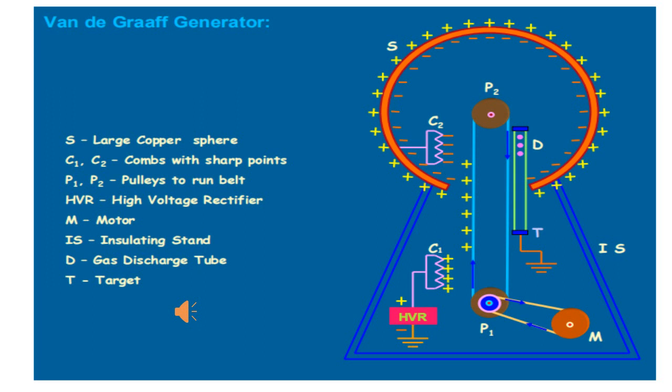A tube with charged particles to be accelerated at its top and the target at the bottom is placed as shown in the figure. The bottom end of the tube is earthed for maintaining lower potential. To avoid the leakage of charges from the sphere, the generator is enclosed in a steel tank filled with air or nitrogen at very high pressure, for example 15 atmospheric pressure.